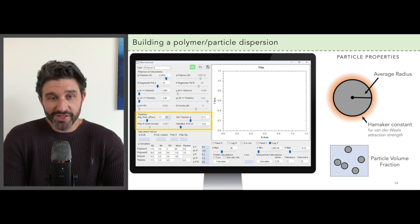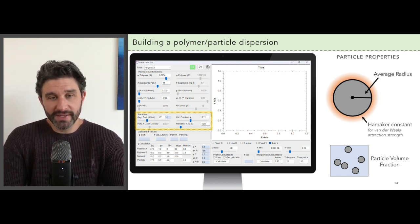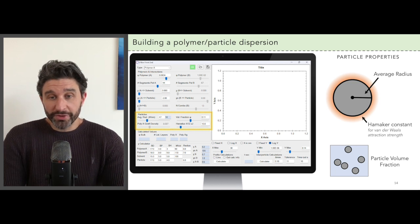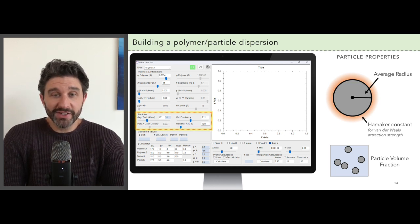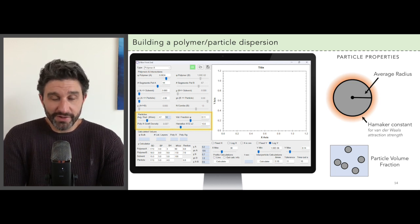Of course any dispersion has particles that vary in size over a distribution. Now the app assumes that the particles are cubes, but this is actually a really good approximation for this level of theory, so no real problem there.